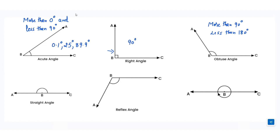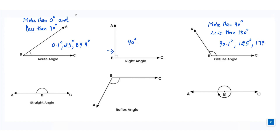For example, 90.1 degree — it's more than 90 degree, so it's an obtuse angle. 125 degree is an obtuse angle. 179.9 degree — since it's less than 180 degree, it is an obtuse angle.